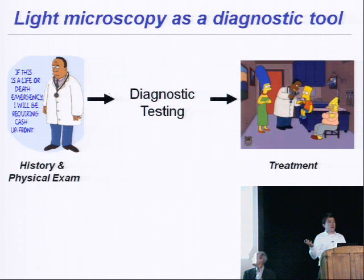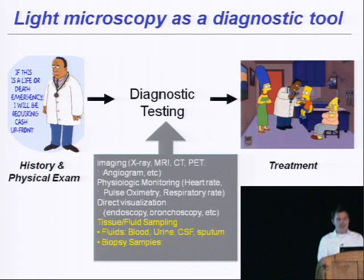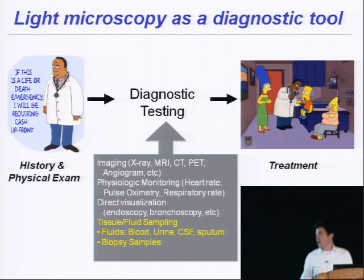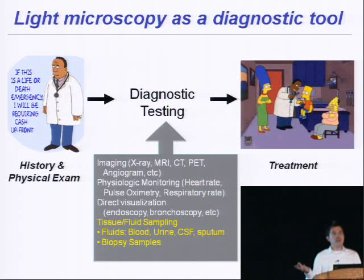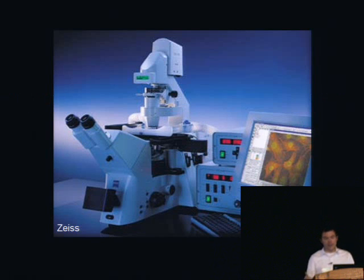Light microscopy is a central tool for diagnostics. You show up at a doctor's office — as in the Simpsons here — and he's got a variety of tools he can use for diagnosis. We've probably all had fluids or biopsy samples analyzed via microscopy, which then leads to the course of treatment. There are a lot of different tests you can do for the same possible disease, but microscopy is oftentimes the gold standard for really identifying what the problem is — which is great if you have a microscope like this.